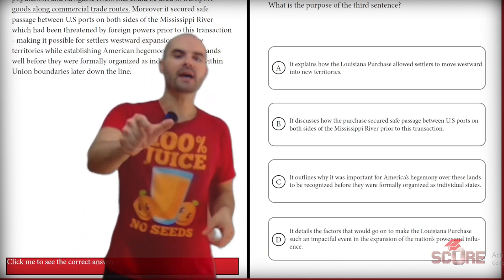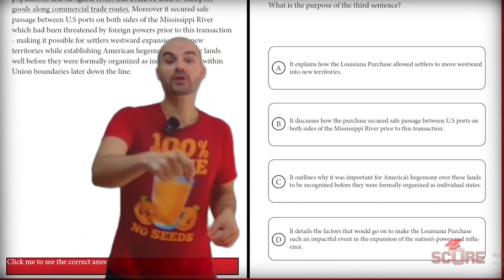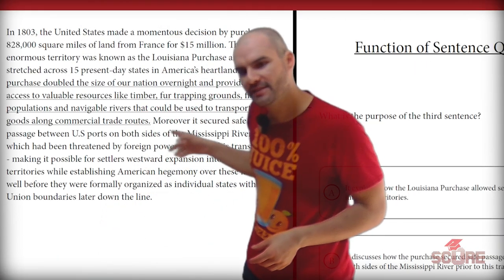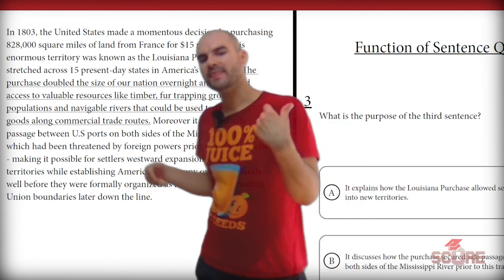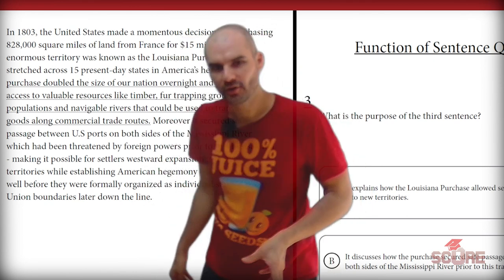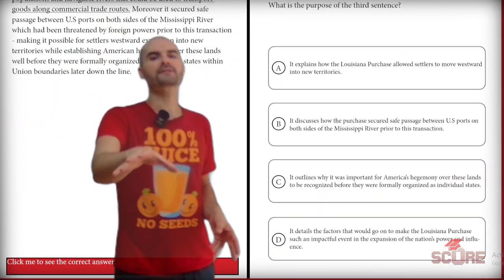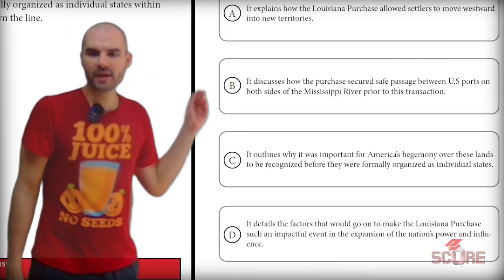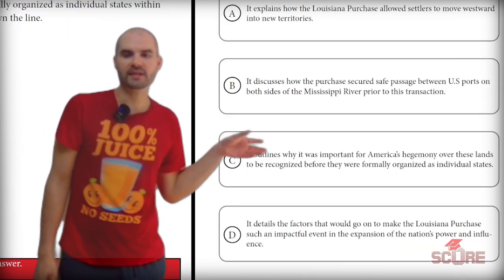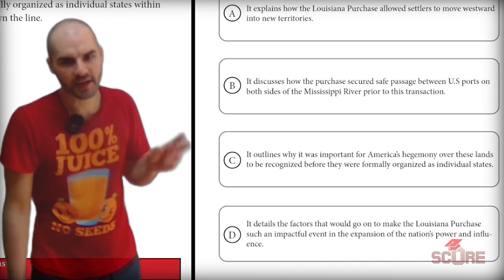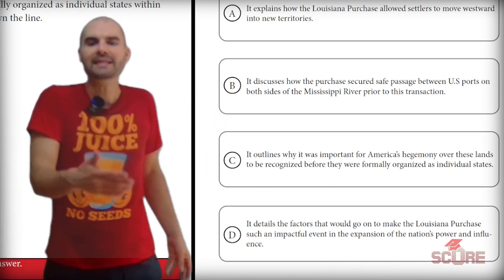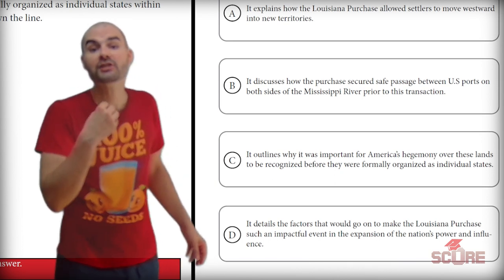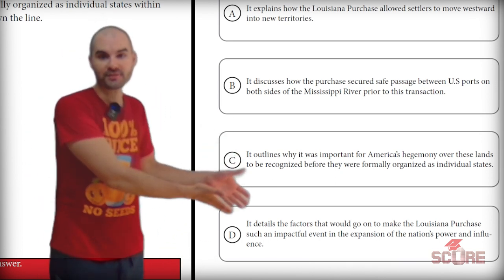Watch out, because sometimes some of these answers correspond to a different sentence. If you look at the sentence right after the underlined sentence, it talks about safe passage — that would be a way to trick you into marking B. In general, these sentence function questions always have a right answer for the wrong sentence. Answer C — outlines why it was important for America's hegemony over these lands to be recognized — no, nothing to do with recognition. That leaves us with D: it details the factors that would go on to make the purchase an impactful event. I mentioned impact, and there's your answer — it's D.